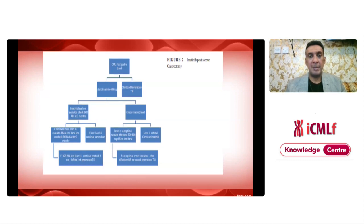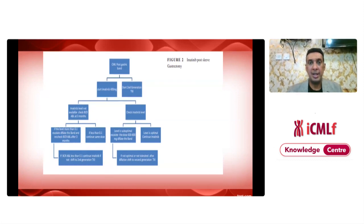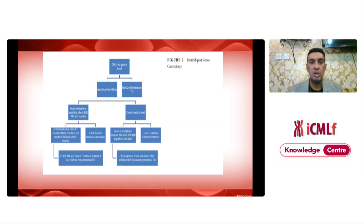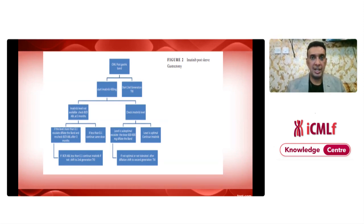We have a diagrammatic schema for CML post-gastric banding: either start a second-generation TKI, or start imatinib 400 mg. If starting imatinib, check imatinib levels and adjust accordingly. If imatinib levels are not available, check PCR at three months and adjust as per the scheme.